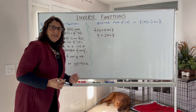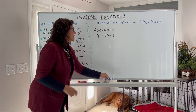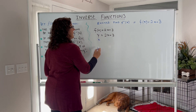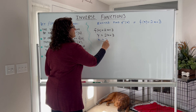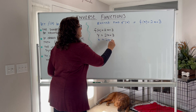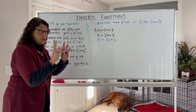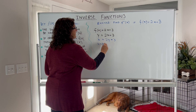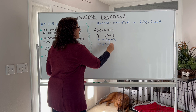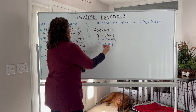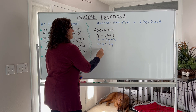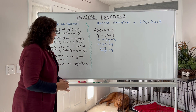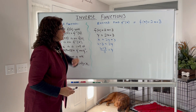Then we want to interchange the x and the y — we want to switch these variables around. Change the x to y and change the y to x. Now we solve for our new y: subtract 3 from both sides, giving x minus 3 equals 2 times y, then divide both sides by 2. So y equals x minus 3 divided by 2. That is the inverse of our function.